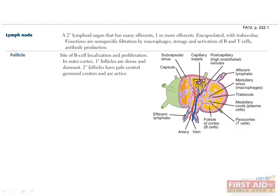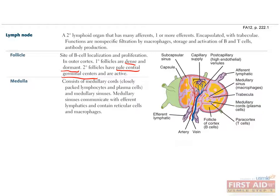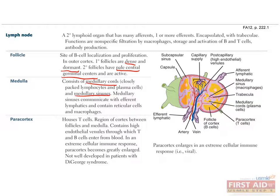The lymph node follicle is the site of B cell localization and proliferation, located in the outer cortex. Follicles are either primary or secondary — the former are dense and dormant, while the latter have a pale central germinal center and are active. The innermost portion is the medulla, consisting of closely packed lymphocytes and plasma cells in medullary cords and medullary sinuses, where reticular cells and macrophages are encountered. The paracortex is the region between the cortex and medulla, and the site of T cells, characterized by high endothelial venules through which T and B cells enter from the blood.